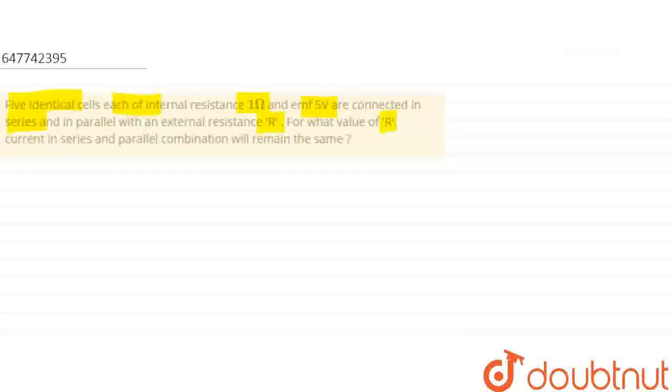Current in series and parallel combination will remain same. What is it? 5 batteries or 5 cells, 1 over 5 volt is 1 MF. We have to connect in parallel and series. Which value is the same? Which value should be the same?